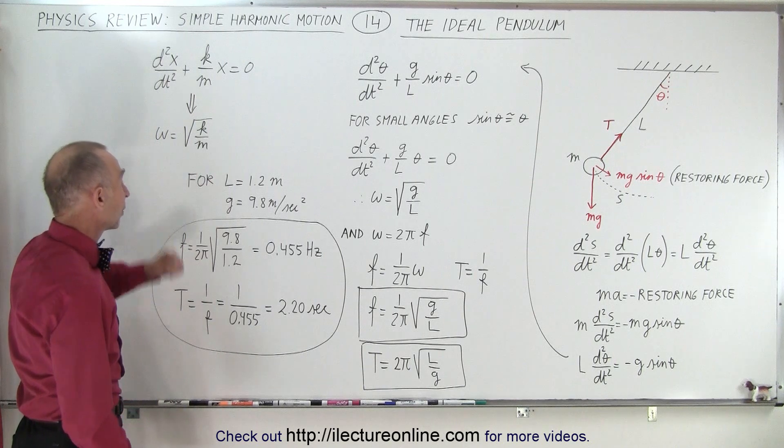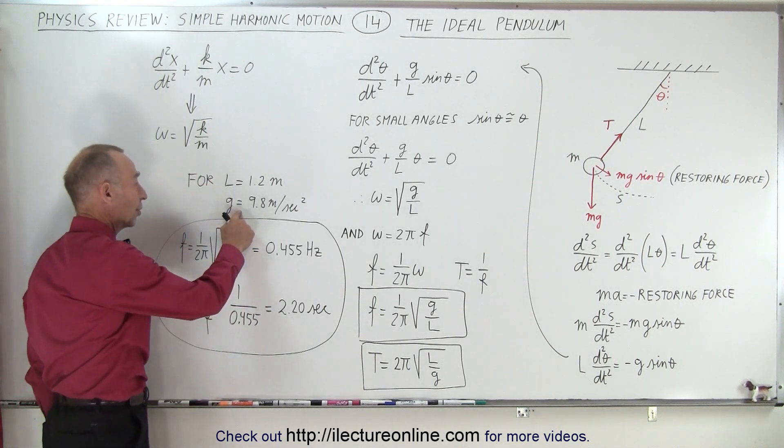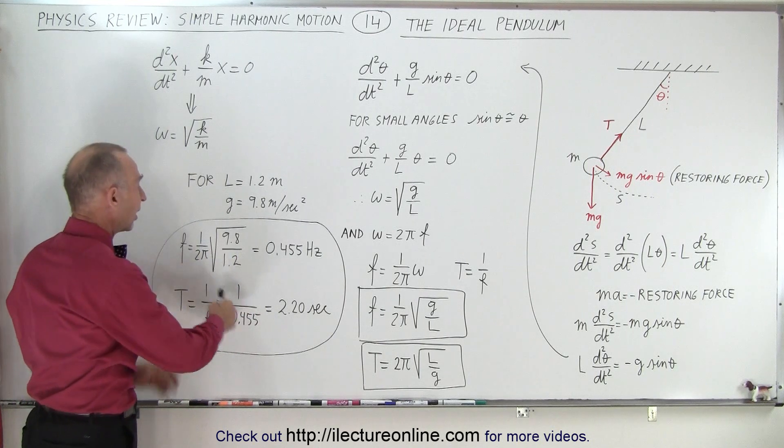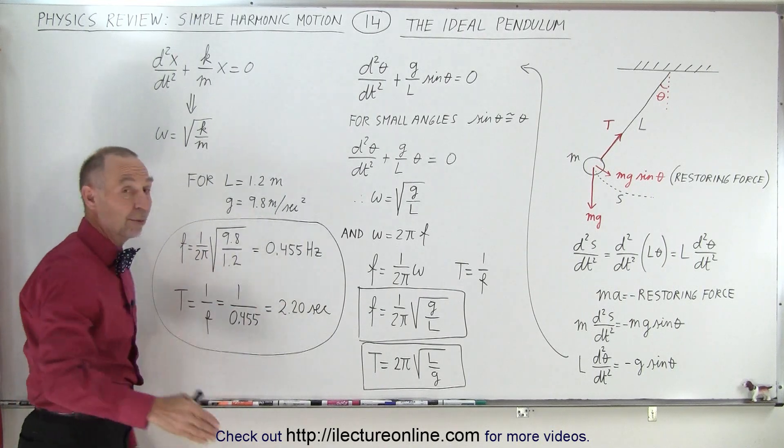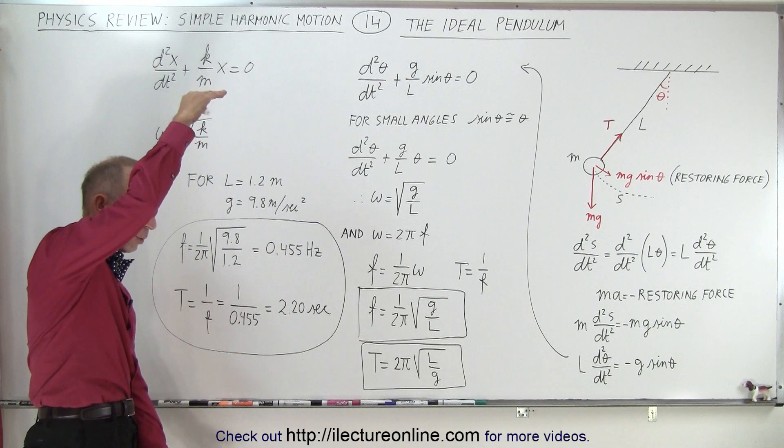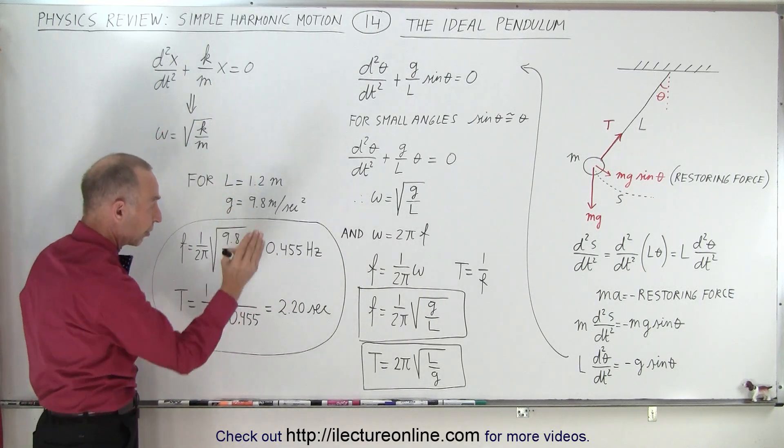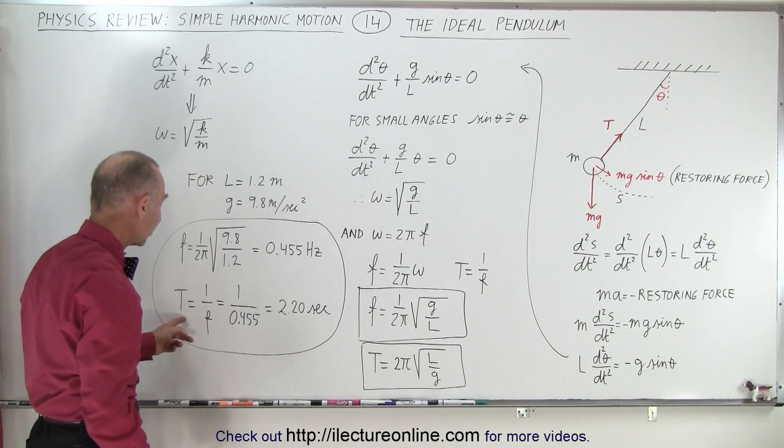As an example, let's say the length is 1.2 meters. We know that g on the earth is about 9.8 meters per second squared. We plug in the numbers. In this case, the oscillatory frequency would be 0.455, so when the pendulum is about 1.2 meters long, it will swing back and forth like this. That's our oscillatory frequency.